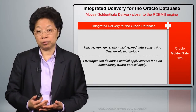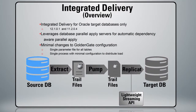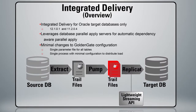What 12C Integrated Delivery has done is made that much more efficient and streamlined. With Integrated Delivery in 12C, running on a 12C GoldenGate environment and a 12C database, you still have your extract capturing the changes from your source environment, placing them into a trail file, and having that trail information sent to the target. But now the Replicat on the target site can take advantage of parallel processing — either on the database or even on the OS — using parallel apply.